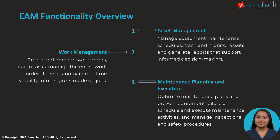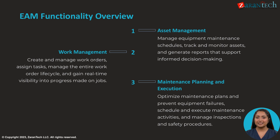Second is Work Management, which handles work order and preventative maintenance planning, scheduling, and execution. Finally is Maintenance Planning and Execution, which optimizes your maintenance strategy as well as inspection and safety procedures. Together, these comprehensive capabilities fully support your end-to-end asset lifecycle.